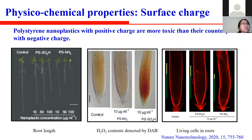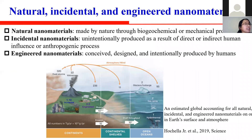Nanoparticles can be divided into three classes based on their sources: natural nanomaterials, incidental nanomaterials, and engineered nanomaterials. Natural nanomaterials are made through biogeochemical or mechanical processes, and have been abundant since Earth's formation, including clays, metal oxides, sulfides, carbonates, and phosphates. These nanomaterials play major biogeochemical roles.